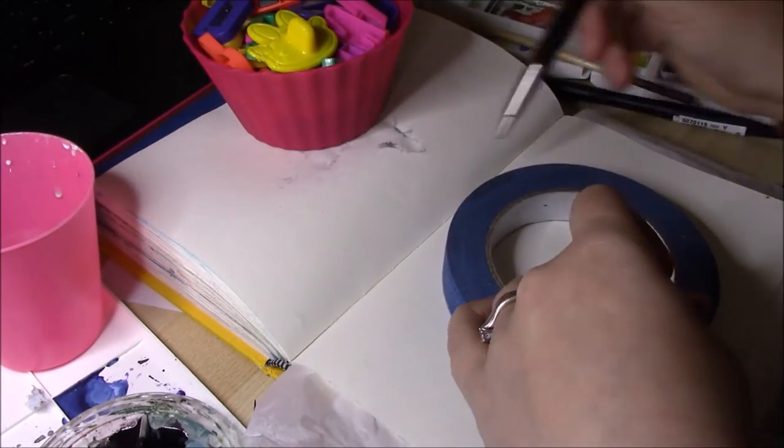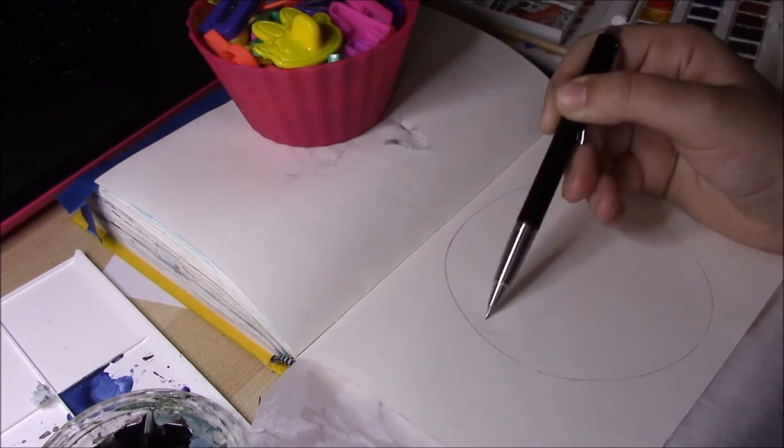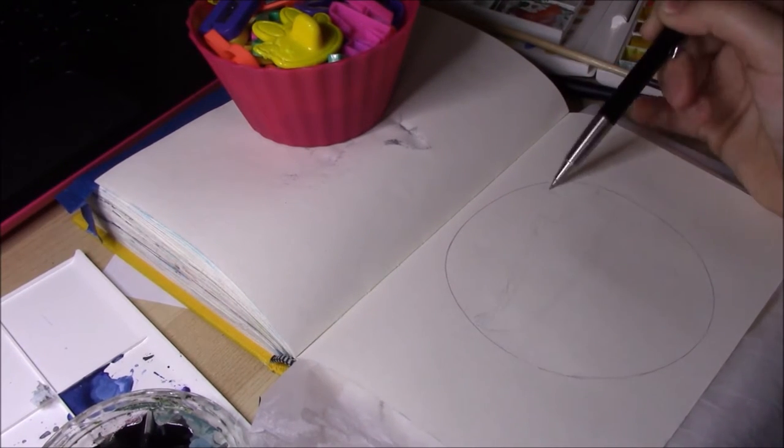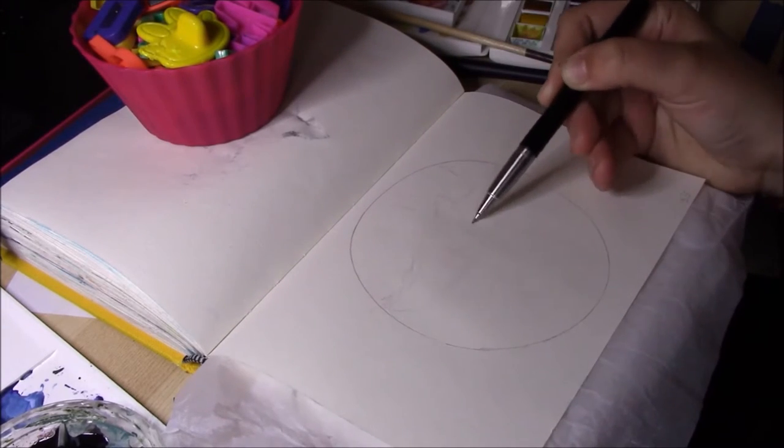Here I'm drawing a circle and sketching in the shark. I'm loosely drawing in the background and I want to have some little fish swimming in front of it.